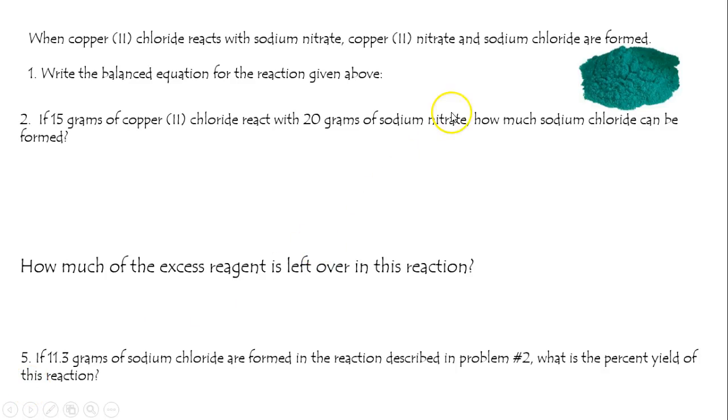When copper 2 chloride reacts with sodium nitrate, copper 2 nitrate and sodium chloride are formed. Let's write a balanced chemical equation. Copper 2 chloride plus sodium nitrate forms copper 2 nitrate and sodium chloride. Note the 1 to 2 to 1 to 2 mole ratio.